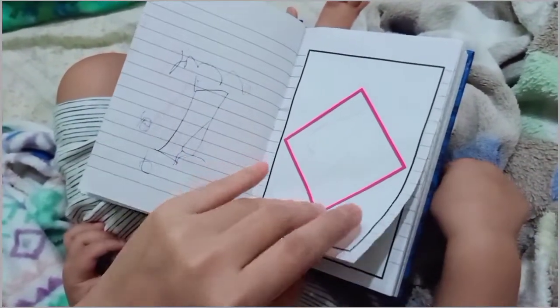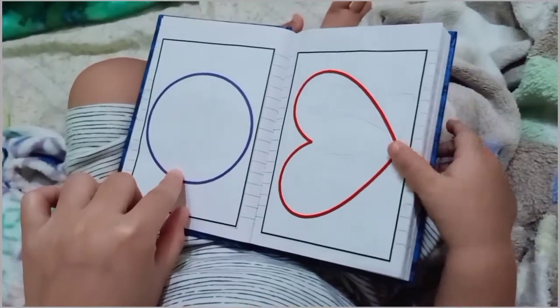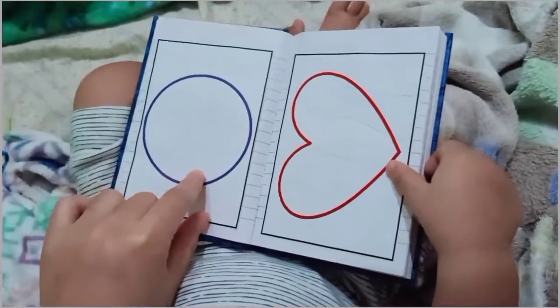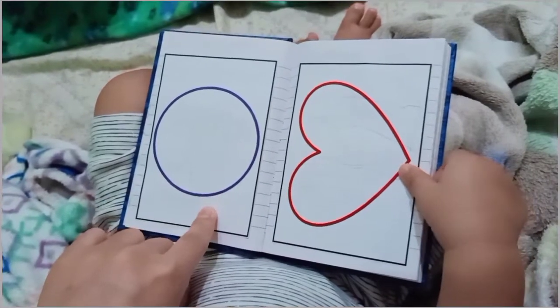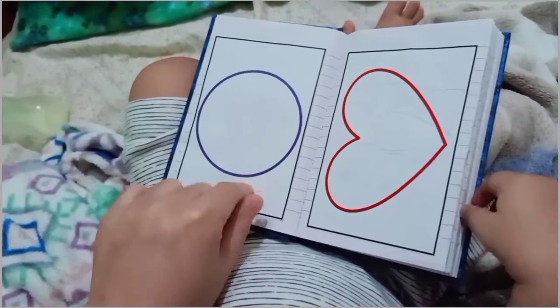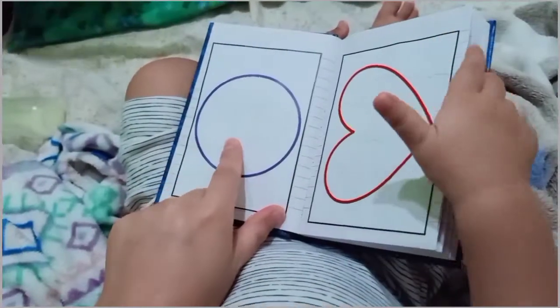Diamond. What about this one? Apple? Mm-hmm, are you sure? No. This one? What shape is this? Wait, this one?